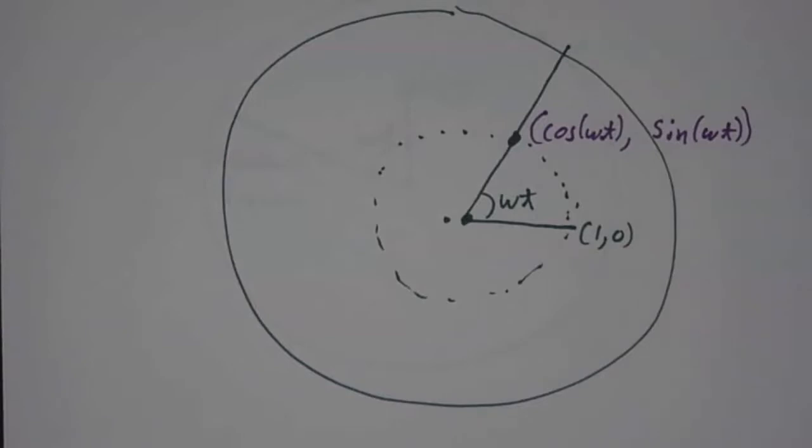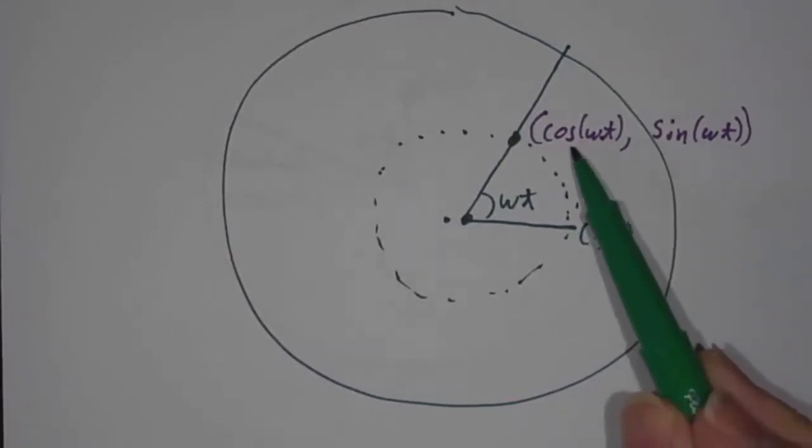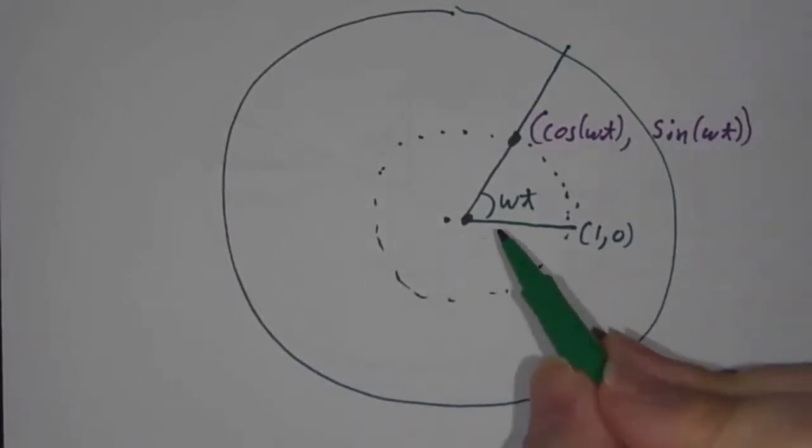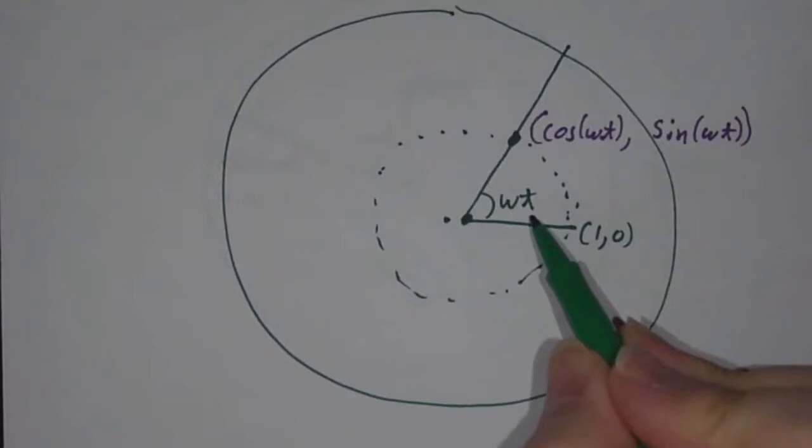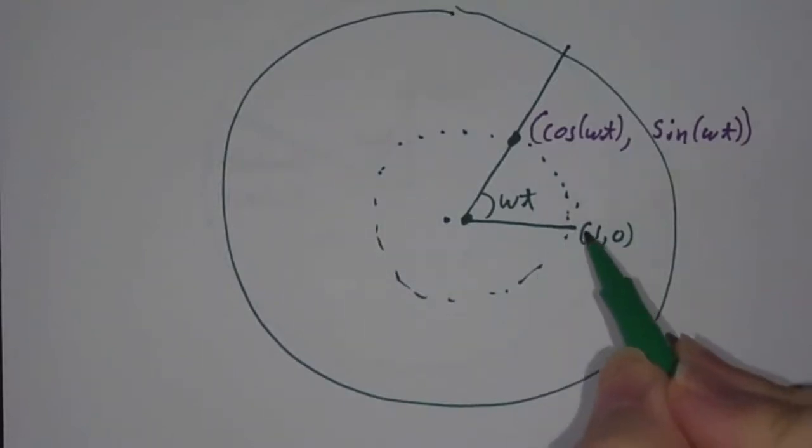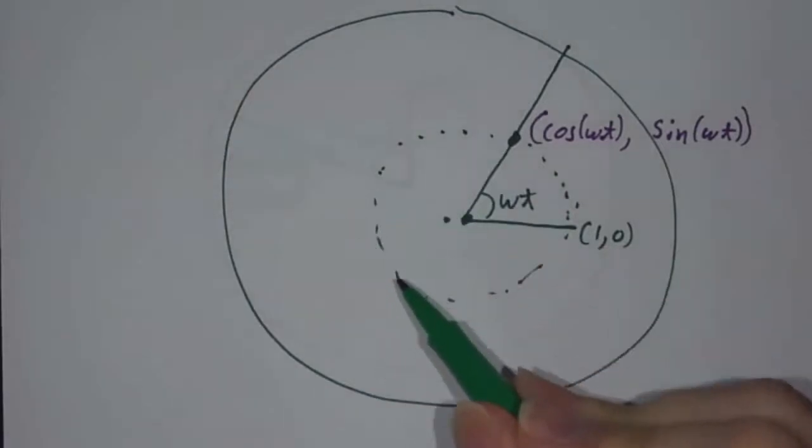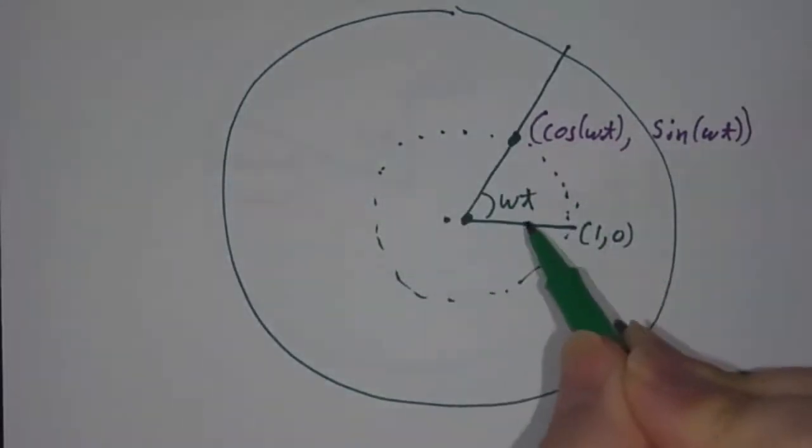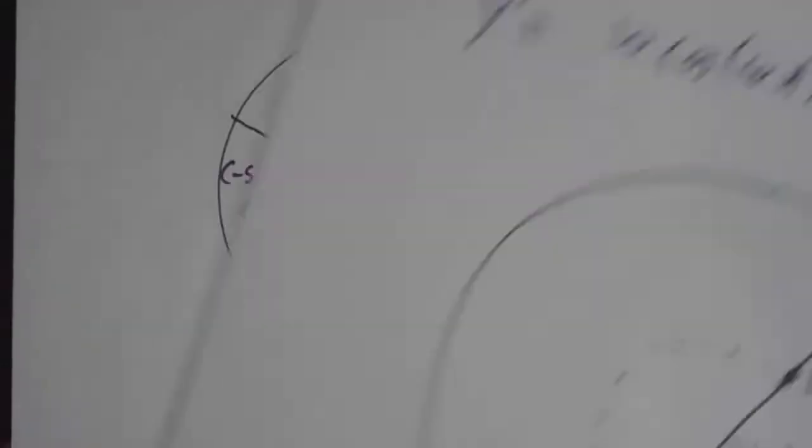And the geometry of it is as follows. At time 0, well, cosine of 0 is 1 and sine of 0 is 0. So at time 0, we're at (1, 0). And at time t, we're at cosine omega t and sine omega t, which is exactly what you'd expect if you rotated by an angle of omega t. We're on the unit circle, we went an angle of omega t around, so in fact, this describes going around in a circle at a rate omega, omega radians per second.